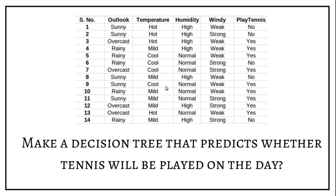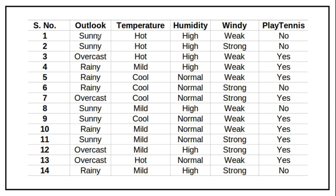We have been given a dataset and we have to make a decision tree that predicts whether tennis will be played on the day or not. Let's observe the dataset. Here we have five attributes: outlook, temperature, humidity, windy, and PlayTennis. PlayTennis is the class attribute — that is the final outcome — and its value depends on the other four attributes.